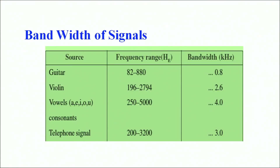Let's look at some common bandwidths of signals. When you are plucking a guitar, you are in the frequency range of around 82 to 880 hertz and the bandwidth is of the order of 0.8 kilohertz. For a violin, it is around 196 to 2794 hertz, that is close to 2.6 kilohertz. The normal sound we produce lies in the range of 250 to 5000 hertz, giving a bandwidth of the order of 4 kilohertz. Telephone signals are generated in the range of 200 to 3200 hertz, giving a bandwidth of 3 kilohertz.